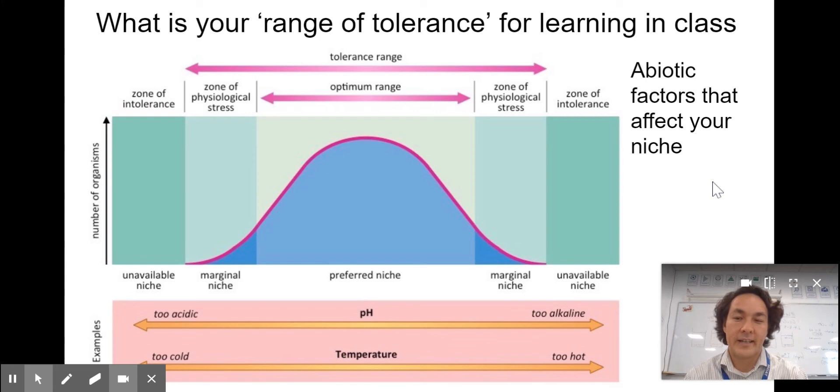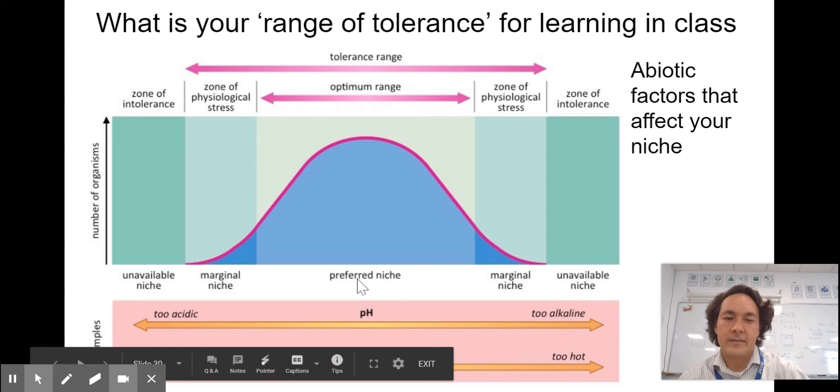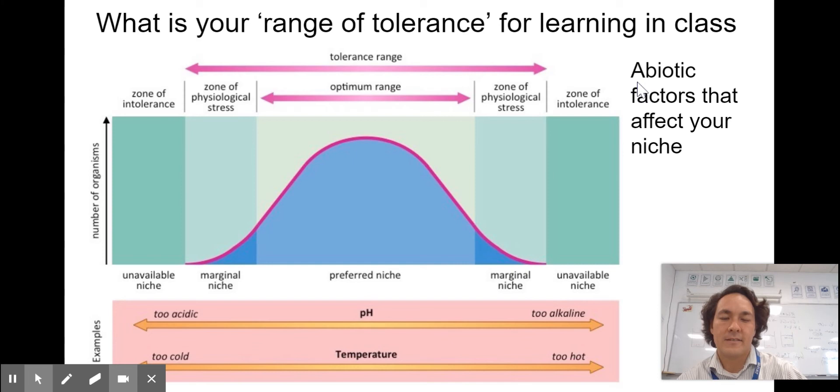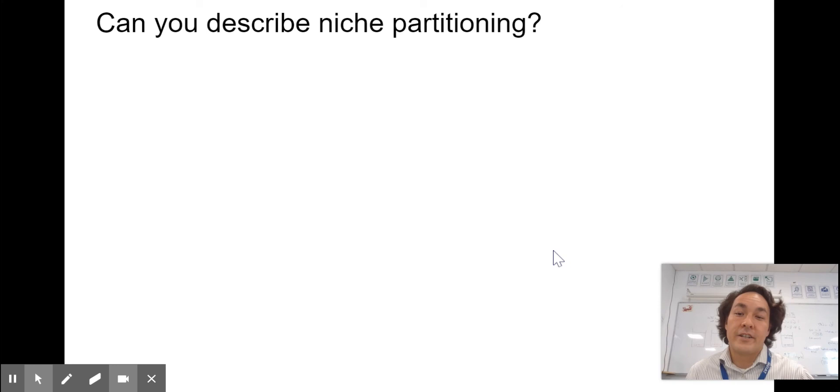What is your range of tolerance for learning in class? If we're together, is the room too cold? Is it too crowded? Is it too hot? A tolerance range is what these trout can survive their niche in. These are abiotic factors, and these are things that are not alive. So things like pH or temperature affecting where an organism can live. Biotic factors are things that are alive, like predators or their food.